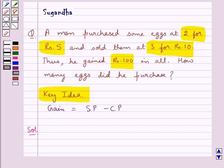We need to find the number of eggs that the man purchased. So we assume, let the number of eggs the man purchased be equal to X.